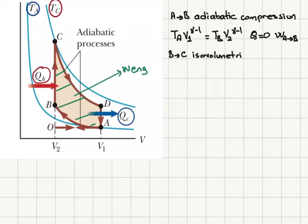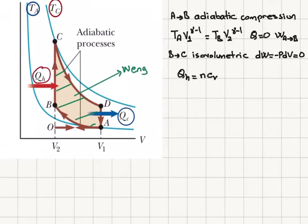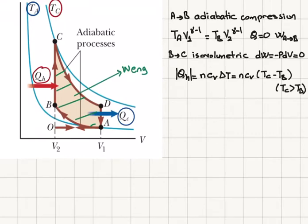B to C is an isovolumetric process. The work done, minus P dV, will be zero because the volume is not changing, but there will be heat exchange. So the heat absorbed QH equals N times Cv times delta T, where Cv is the molar specific heat at constant volume. Delta T is the temperature at point C minus the temperature at point B. This is the absolute value of QH, and it is positive because TC must be greater than TB.